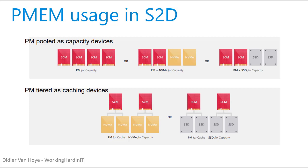If you use persistent memory as a capacity device in S2D, you can build an S2D node completely out of persistent memory. In reality, you'll probably want to combine storage class memory with NVMe or even SSDs — no HDD, because these are way too fast to combine with hard drives. You can also use PMEM as caching devices, again paired with NVMe or SSDs.